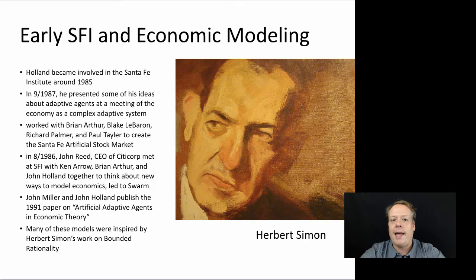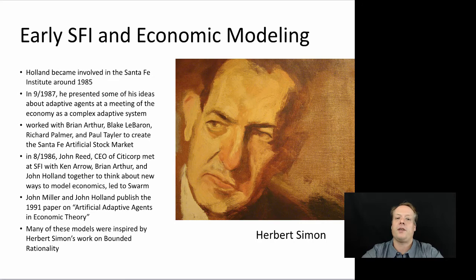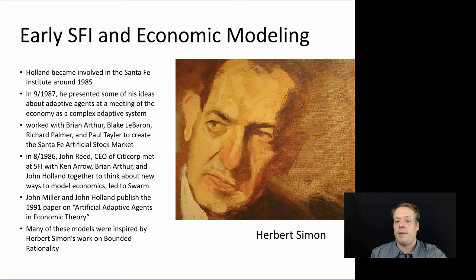In August of 1986, partially as a response to some of the problems they were seeing, John Reed — CEO of CityCorp — met at Santa Fe with Ken Arrow, Brian Arthur, and John Holland, along with other SFI researchers, to think about new ways to model economics. That led to SWARM, which was one of the first agent-based modeling languages. All these great thinkers at SFI realized they needed to start thinking about different ways to model economic systems in order to really move forward.